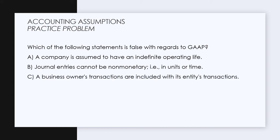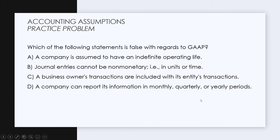Answer C: a business owner's transactions are included with its entity's transactions. That is not true — a business owner's transactions are separate from the entity's transactions. Since this is false, C is going to be the correct answer, and this is the business entity assumption. And then answer D: a company can report its information in monthly, quarterly, and yearly periods. Yes, that's the time period assumption. So each one of these is a way you could see a question phrased on an exam.